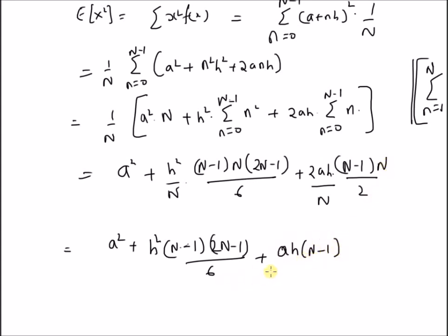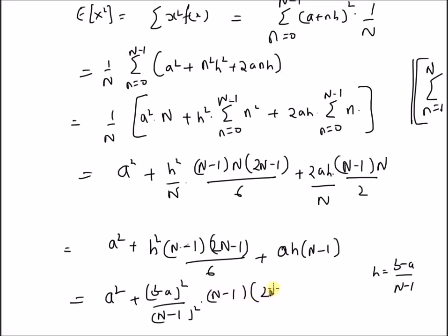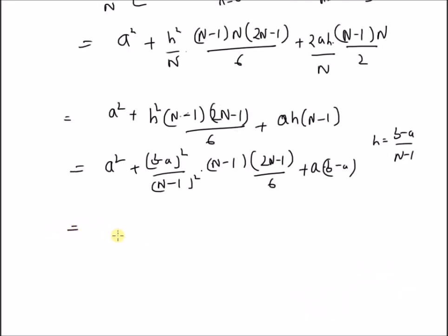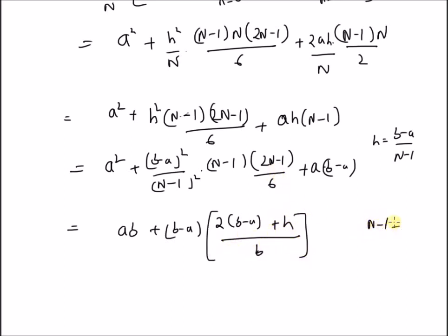After cancellation, this is equal to a squared plus h squared into n minus 1 into 2n minus 1 divided by 6, plus a into h into n minus 1. Now by using the relation between a, b, and h — since b equals a plus h into n minus 1, h equals b minus a by n minus 1 — and substituting, we get b minus a whole squared divided by n minus 1 squared, into n minus 1 into n minus 1 into 2n minus 1 divided by 6. The last term, a into h into n minus 1, simplifies to a into b. So this is the second moment.